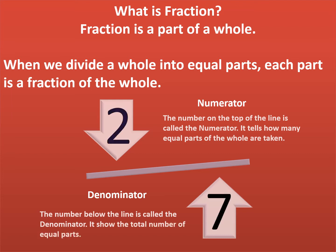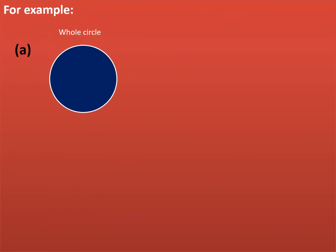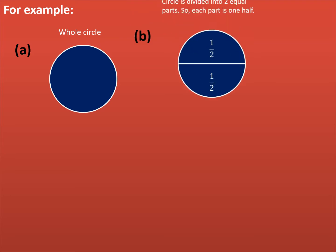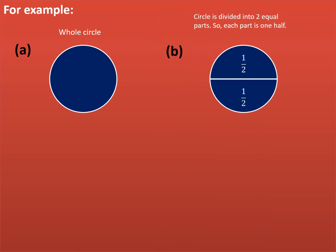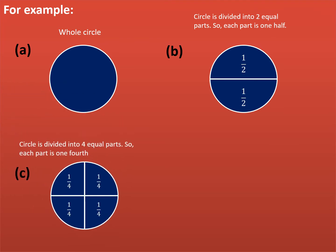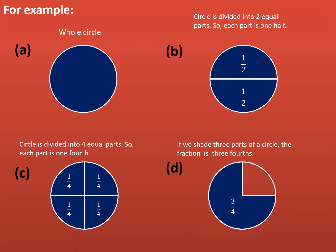What is a fraction? Fraction is a part of a whole. When we divide a whole into equal parts, each part is a fraction of the whole. For example, in 2 upon 7, 2 is called the numerator and 7 is called the denominator. Number A is a whole circle. In Number B, the circle is divided into two equal parts, so each part is one half. In Number C, the circle is divided into four equal parts, so each part is one fourth. And in Number D, if we take three parts of a circle, the fraction is three fourths.